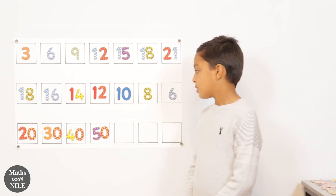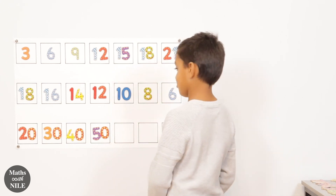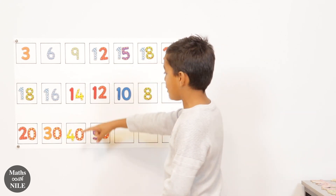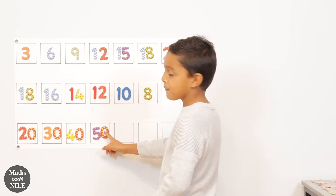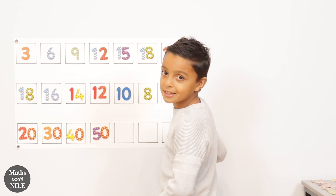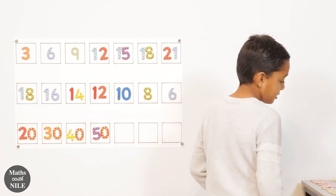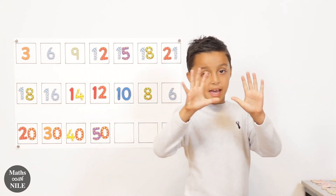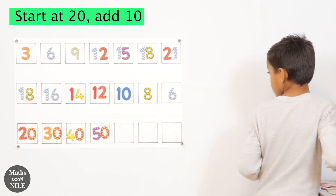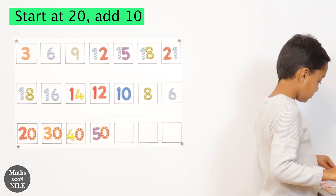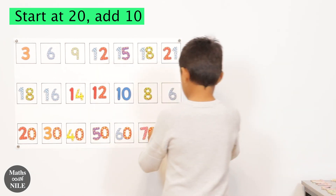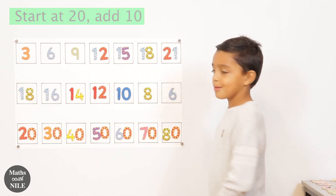Let's look at the third one. Twenty, thirty, forty, fifty — sixty, seventy, eighty. Very good. So what's happening with those numbers? It's going up in ten. Very good, and it started at twenty. Brilliant.